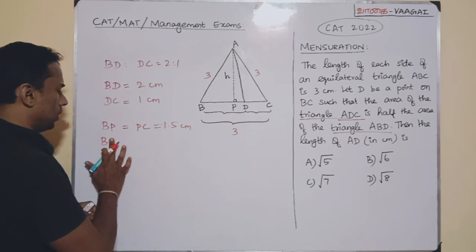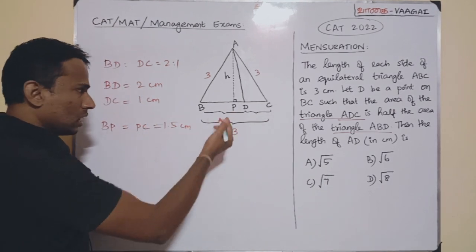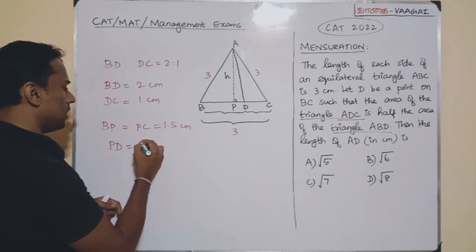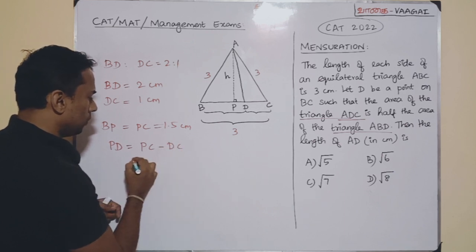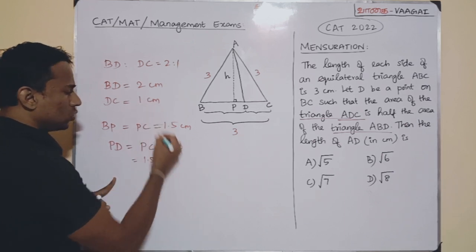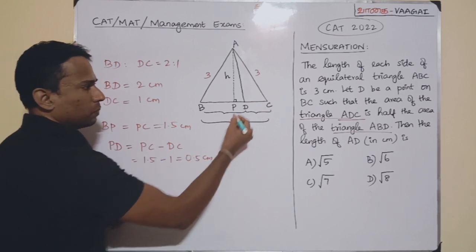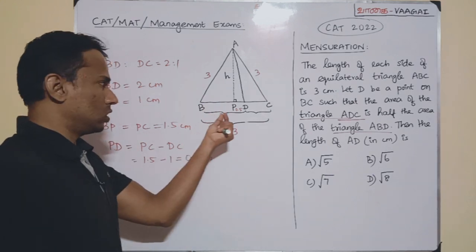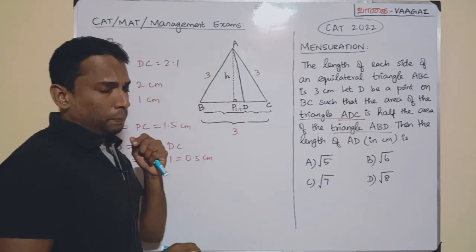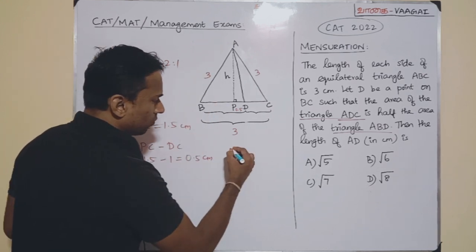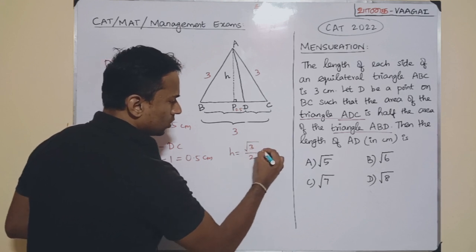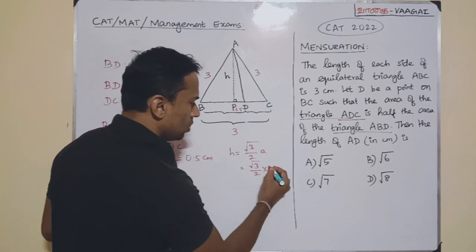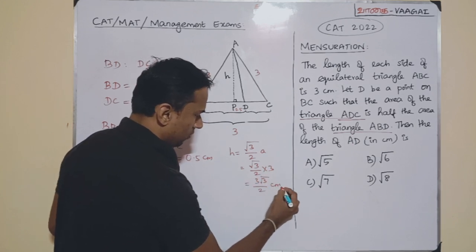Now let us find PD. PD is equal to PC minus DC. PC is 1.5 and DC is 1, so PD equals 0.5 centimeters. The height AP of an equilateral triangle is root 3 by 2 times A, so with A equal to 3, height H equals 3 root 3 by 2 centimeters.